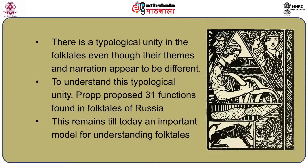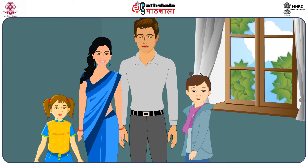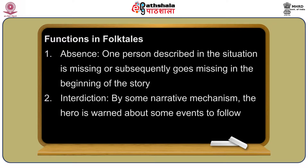Most folk tales begin with descriptions of identical or similar situations, and the functions follow the initial situations. For example, in the beginning of a folk tale, we may mostly find a general basic description of members of a family, or a description of a man who may later play a lead role with heroic exploits. Then we may find that one of the members of the family is absent from the situation described — perhaps having gone out for some important work for the entire family. This function is termed 'absence.' The second function is 'interdiction,' where by some narrative mechanism the hero is warned about some events which are to follow.